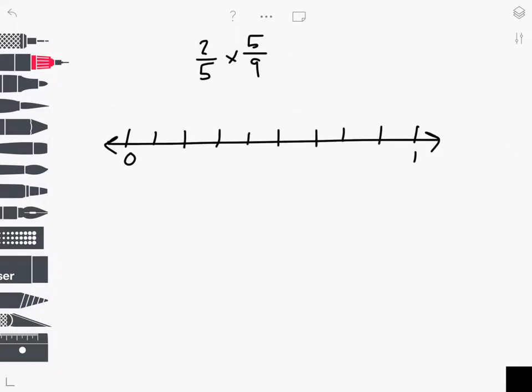I've got ninths and I'm going to mark off 5/9: 1/9, 2/9, 3/9, 4/9, 5/9. I will highlight that length of 5/9.